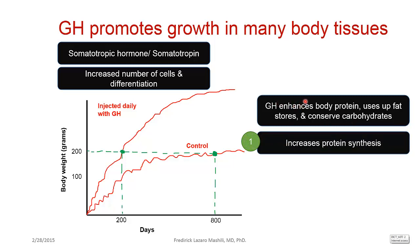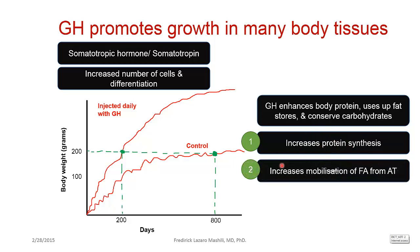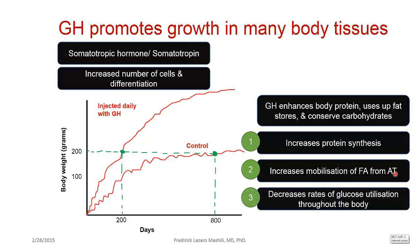The enhancement of body protein is achieved by increasing protein synthesis. Growth hormone also increases mobilization of fatty acids from adipose tissues — breaking down fat stores to produce energy. When it comes to carbohydrate metabolism, the function of growth hormone is to decrease the rate of glucose utilization throughout the body, which means you are conserving carbohydrates.